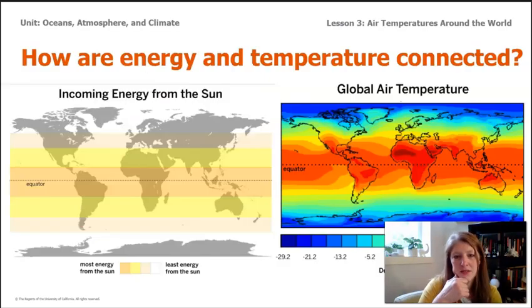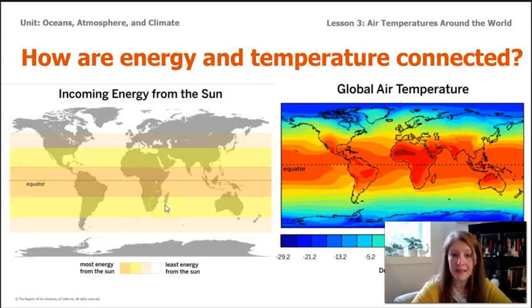So the question that we need to try to understand is how are energy and temperature connected? And as I'm looking at this, I can see these two maps here. There's the incoming energy from the sun and the global air temperature. And I think that what we've discovered as we've been doing this lesson together is that we've discovered that the amount of energy that comes from the sun directly affects the global air temperature. Locations near the equator are warmer because they're receiving more energy from the sun.